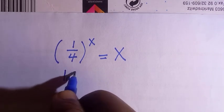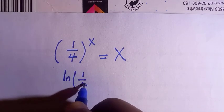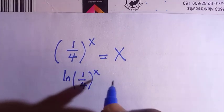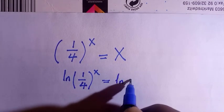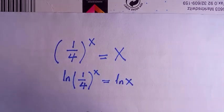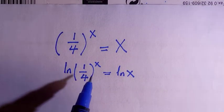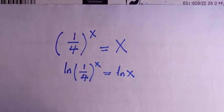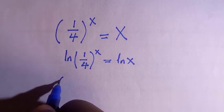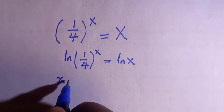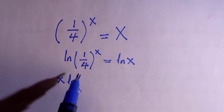If I introduce ln to this, we have ln of (1/4) raised to the power x equals to ln of x. And from the use of logarithm, x will come to the front of ln — so we have x times ln of (1/4).